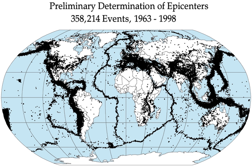The objective of earthquake engineering is to foresee the impact of earthquakes on buildings and other structures and to design such structures to minimize the risk of damage. Existing structures can be modified by seismic retrofitting to improve their resistance to earthquakes. Earthquake insurance can provide building owners with financial protection against losses. Individuals can also take preparedness steps like securing water heaters and heavy items, locating shutoffs for utilities, and being educated about what to do when shaking starts. For areas near large bodies of water, earthquake preparedness encompasses the possibility of a tsunami caused by a large quake.